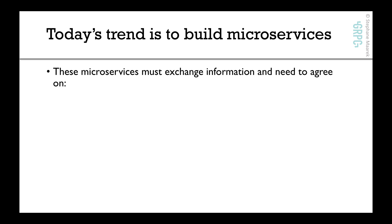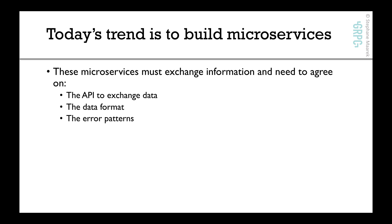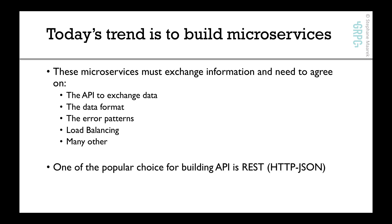When these microservices exchange information, they need to agree on a lot of things. They need to agree on the API to exchange data, on the data formats, on the error patterns, on load balancing, and on many other things. One of the very popular choices for building APIs — and you've probably heard of it if you're in this course — is REST or HTTP JSON as a broader mechanism.